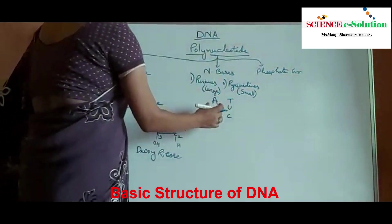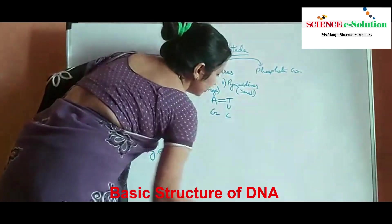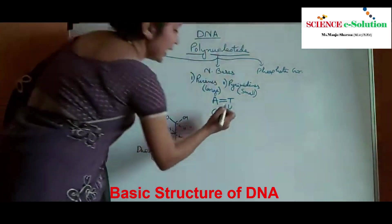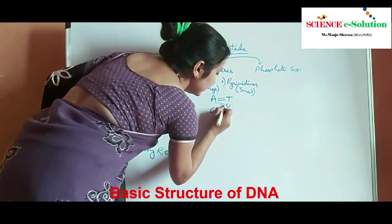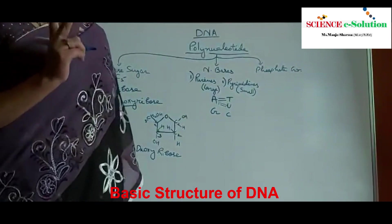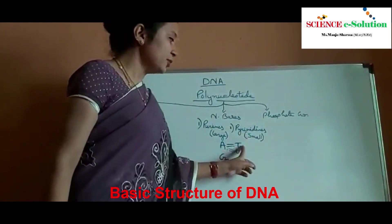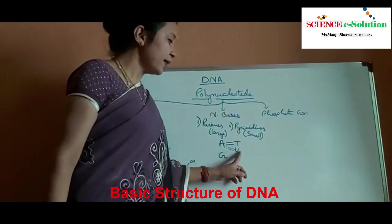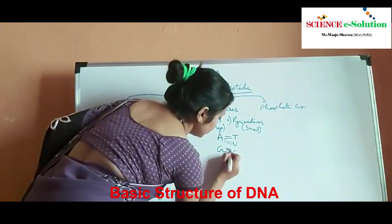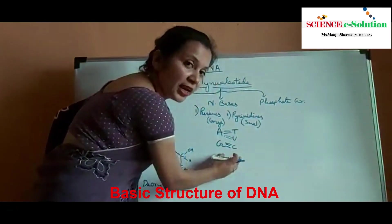Adenine pairs with thymine in DNA with two hydrogen bonds. But in the case of RNA, adenine always pairs with uracil and not with thymine. So this is the second basic difference between DNA and RNA — thymine pyrimidine is present in DNA and uracil pyrimidine is present in RNA. And guanine always pairs with cytosine with three hydrogen bonds.